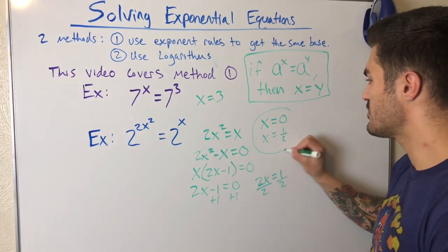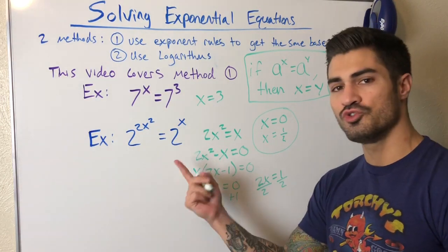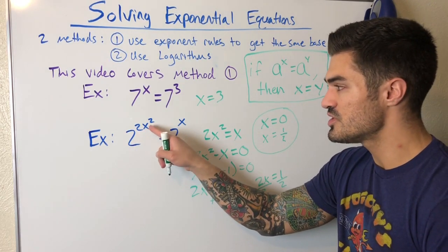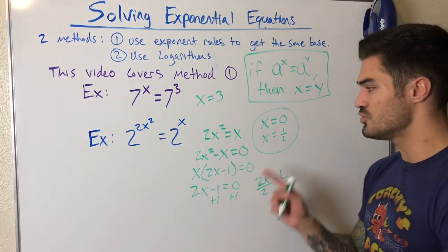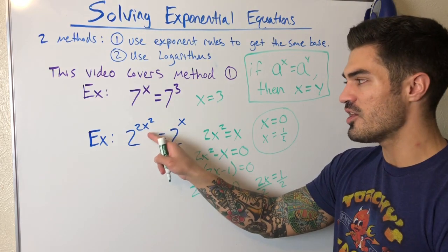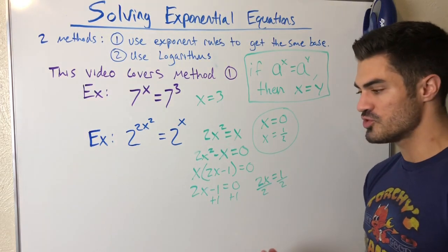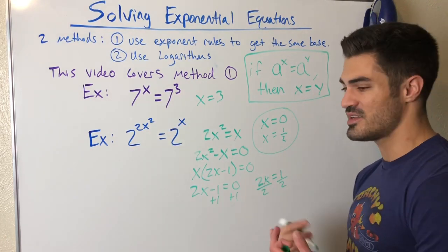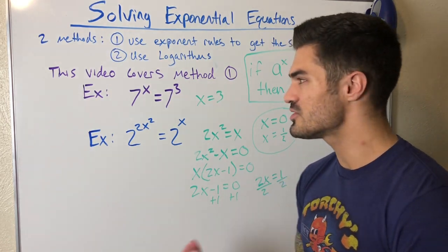So these are the solutions. These are the values for x that when I substitute these back in for x, I get true equations for both of these. Think about it. Two to the zero is one. Two to the two times zero squared, that's one as well. Zero squared is zero times two, that's zero. One equals one. That is a true statement. And the same goes for the one half. I get two to the one half power and then I get one half squared, which is one fourth times two, which is one half. So I get two to the one half equals two to the one half. These are both true statements.